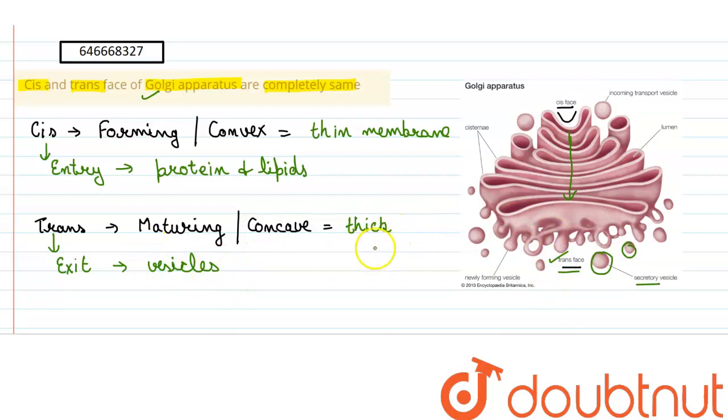So the membranes which are present here are thick in nature. This statement becomes false because they are not completely same. The cis and trans phases are different. So the statement is false.